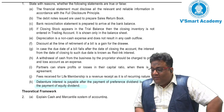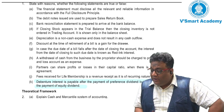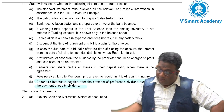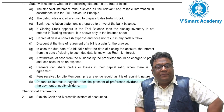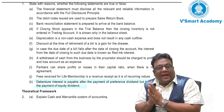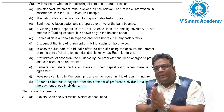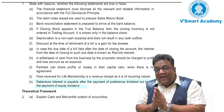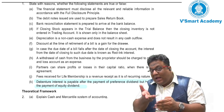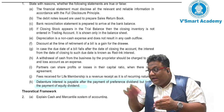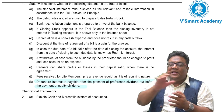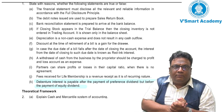Debenture interest is payable after the payment of preference dividend, but before the payment of equity dividend. Matlab, yahan par kehna hai ki debenture holders ko jo hum interest dete hai, woh preference shareholders ko dividend dene ke baad dete hai, lekin equity shareholders ko dividend dene ke pehle dete hai. True or false?